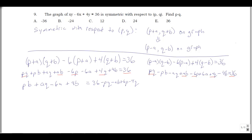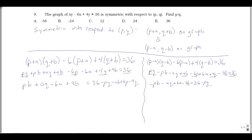Moving the red underlined terms over from the second equation gives: negative pb minus aq plus 6a minus 4b equals 36 minus pq minus ab plus 6p minus 4q. The right-hand sides are the same, so the left-hand sides must be equal: pb plus aq minus 6a plus 4b equals negative pb minus aq plus 6a minus 4b.